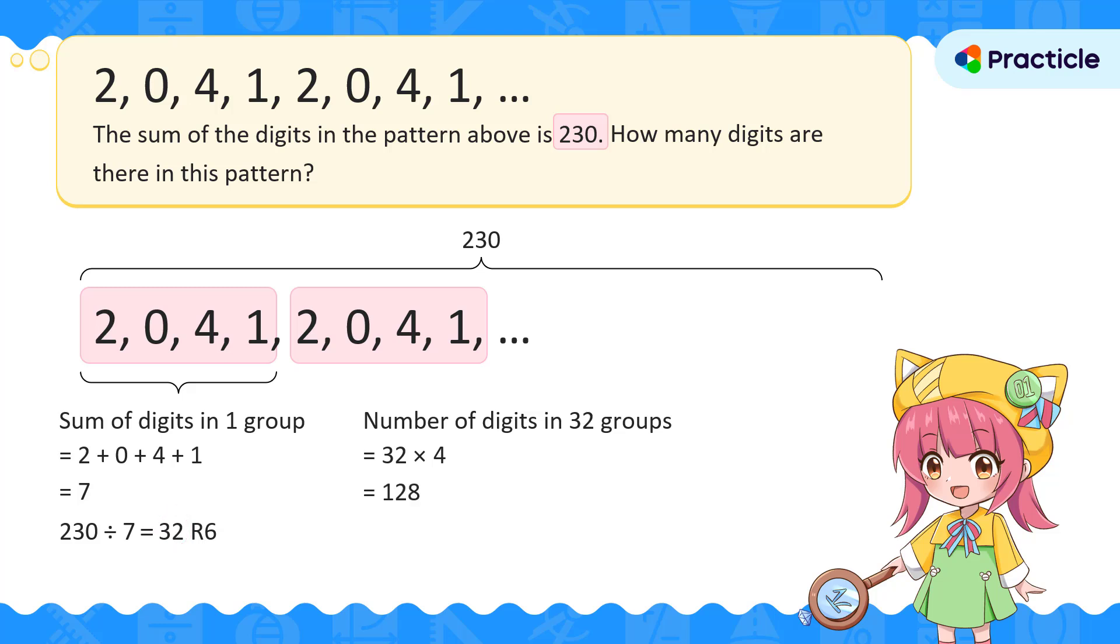Is this our answer? Well, don't forget about the remainder. We have a remainder of 6. Here's the tricky part. Does this 6 represent the number of the digits left, or the value of the remaining digits?